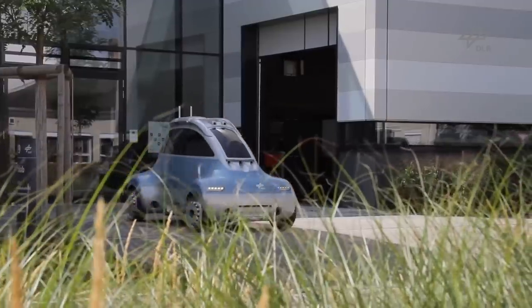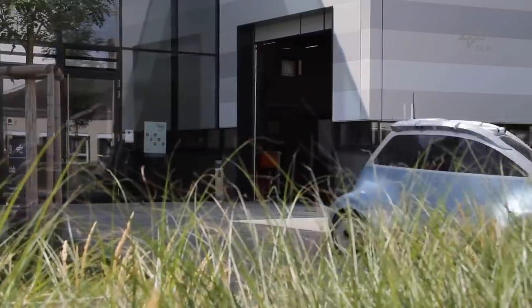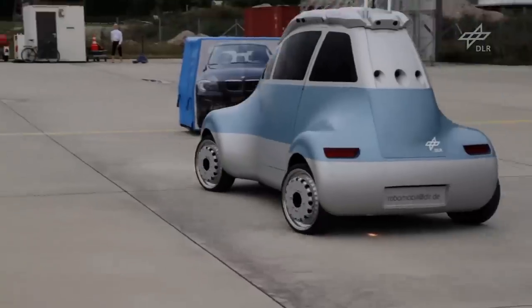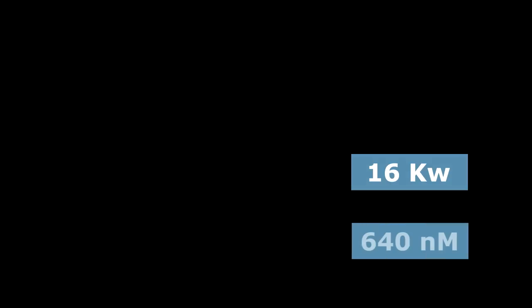In addition, Robomobile has got a fully autonomous driving system based on the readings of eight cameras and a dozen sensors on board. Each electric motor has got a power of 16 kilowatts and the total torque is 640 newton meters.